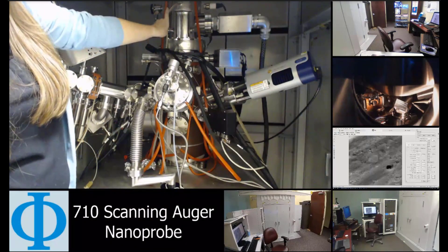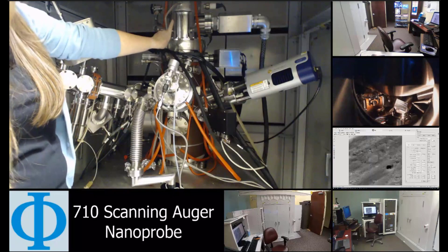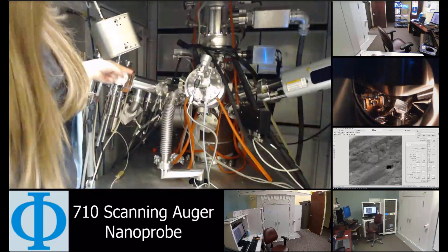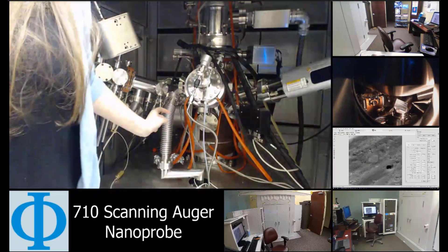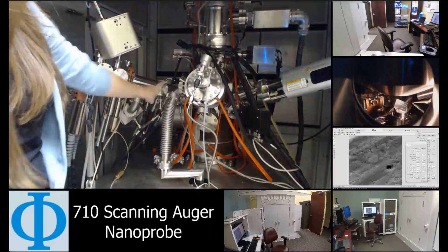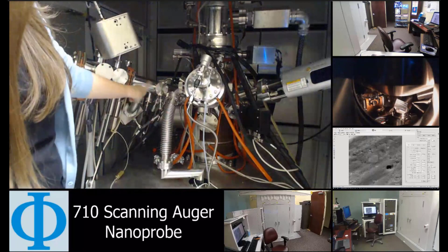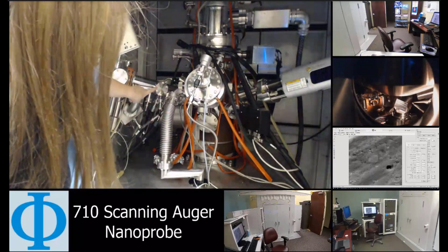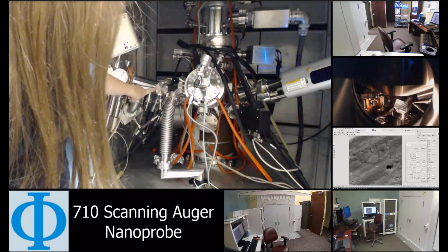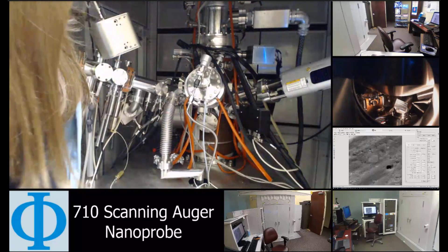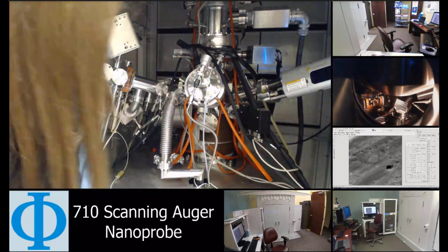We have electrons coming down from the top and the analyzer is on the same axis — it's our coaxial CMA analyzer. We have our FIB gun right here for doing FIB cuts, and we also have the intro port which is on the other side of the system.